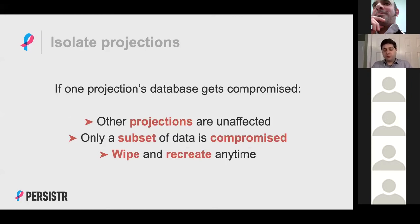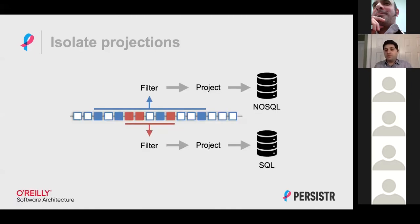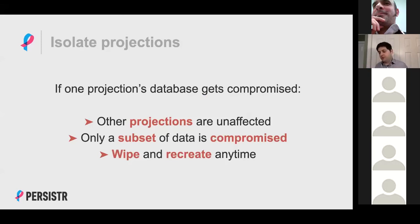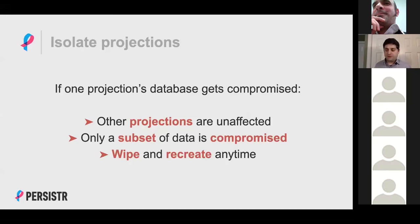Keep your projections isolated from each other as much as possible. Keep only a subset of data in each projection. The nice thing about the event stream is you can actually wipe a database and recreate it at any time. If an attacker has compromised and modified a projection database, you can no longer trust that data — but you can just wipe it and replay from the event stream to recreate it. We actually did that at Cater a few times and it worked out well.